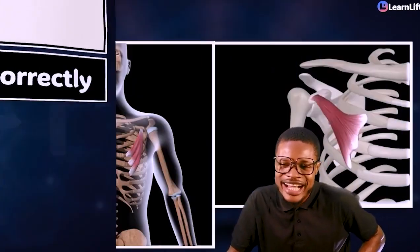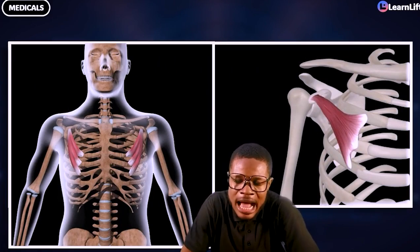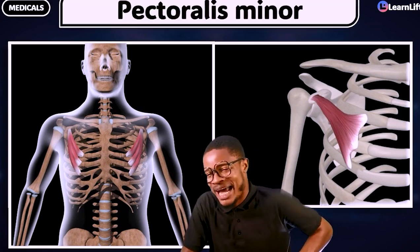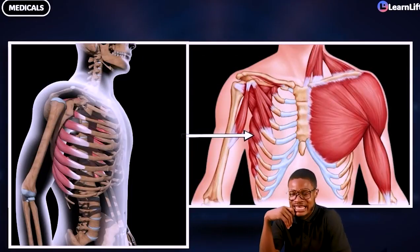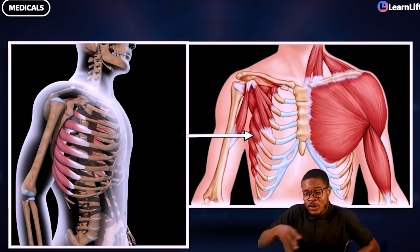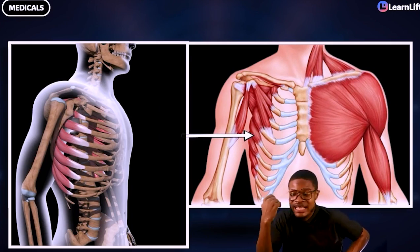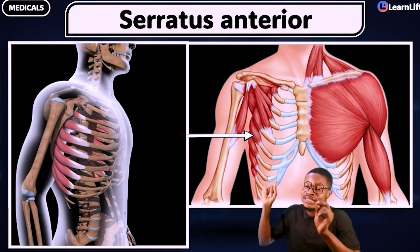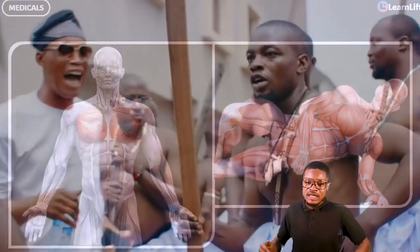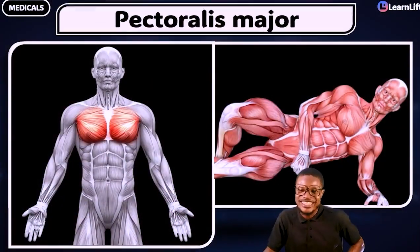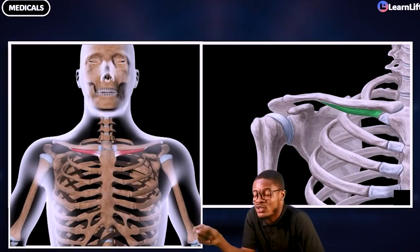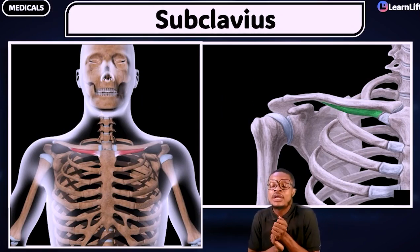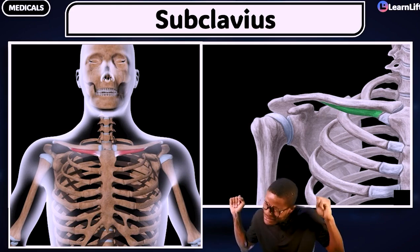Let's answer some review questions. Identify this muscle — correct, it is the pectoralis minor. Now identify the zigzag muscle — that's the serratus anterior. Which muscle is the big chest muscle? That's the pectoralis major. And the muscle underneath the clavicle — that is the subclavius. If you got these quickly, you are doing very well.